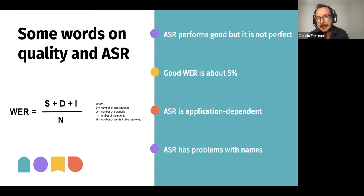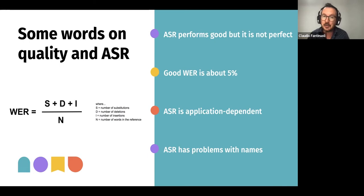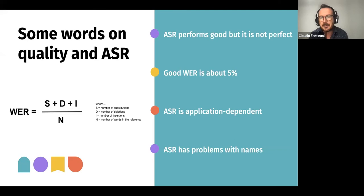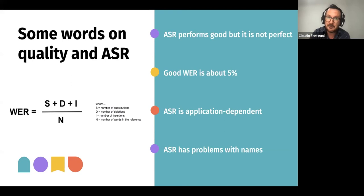Quality depends on many factors: the language being transcribed — there is a bias in the ASR ecosystem towards widely spoken languages compared to languages with fewer speakers. It also depends on the accent of people, a little bit like humans: if you're trying to understand a person speaking with an accent you're not accustomed to, you have more difficulties. The same happens with speech recognition. It also depends on the kind of speech or audio — speech recognition works very well for formal speeches but badly for slang or informal speech.